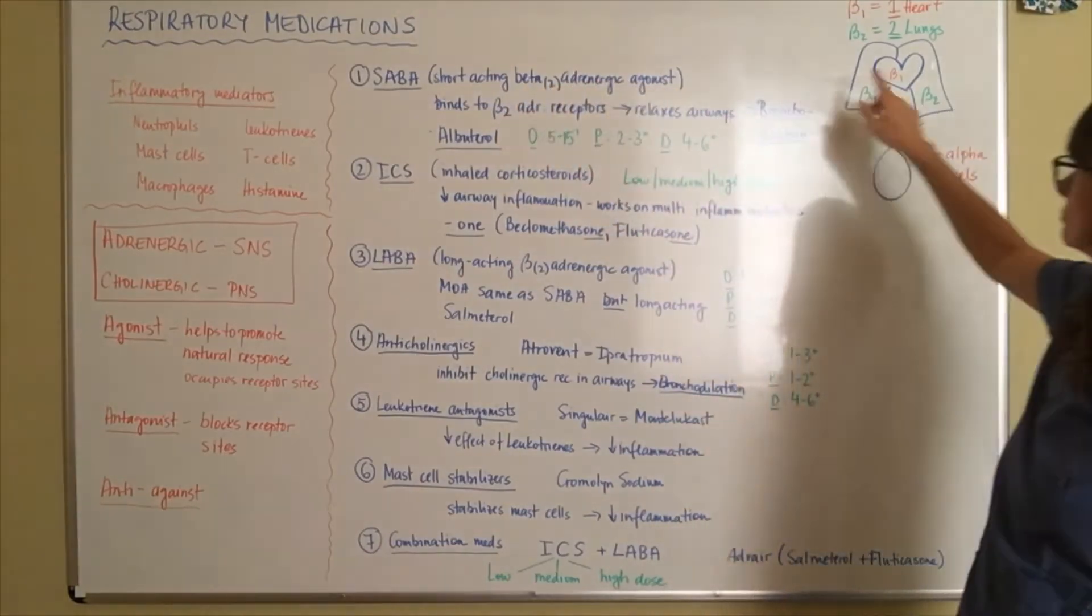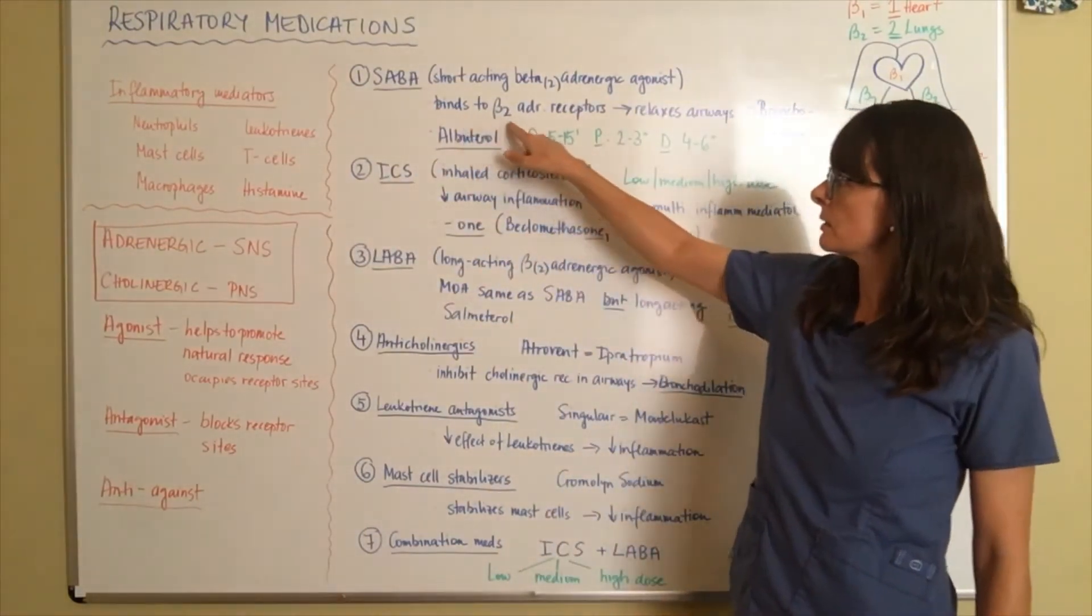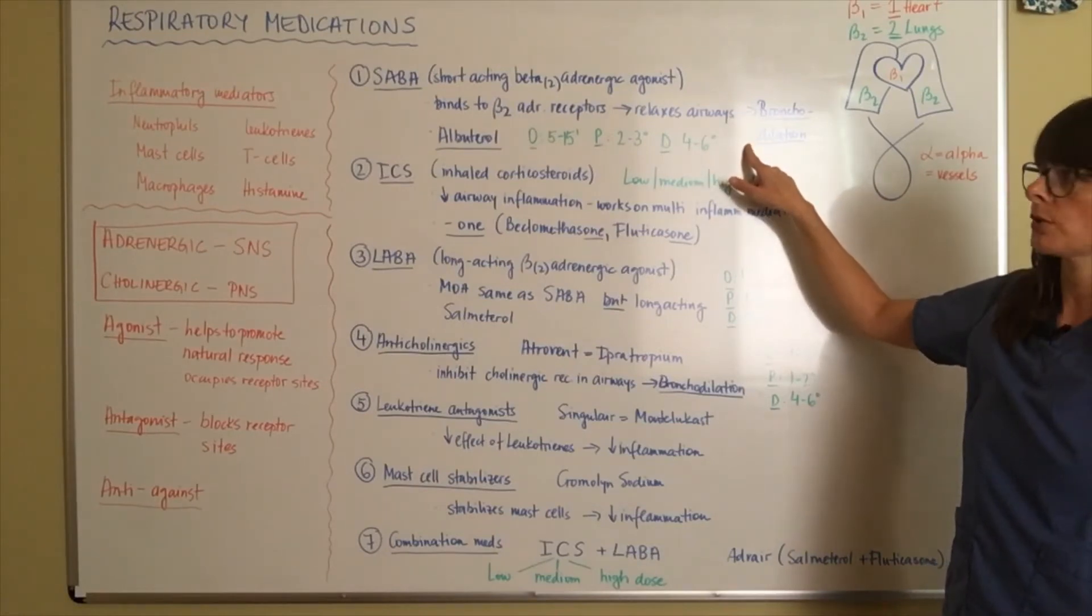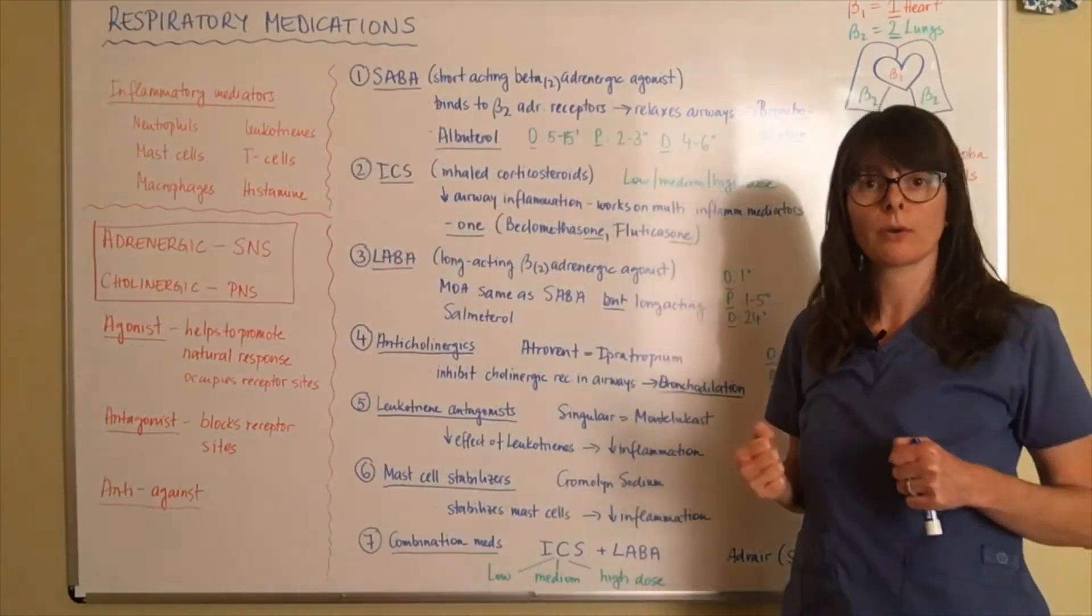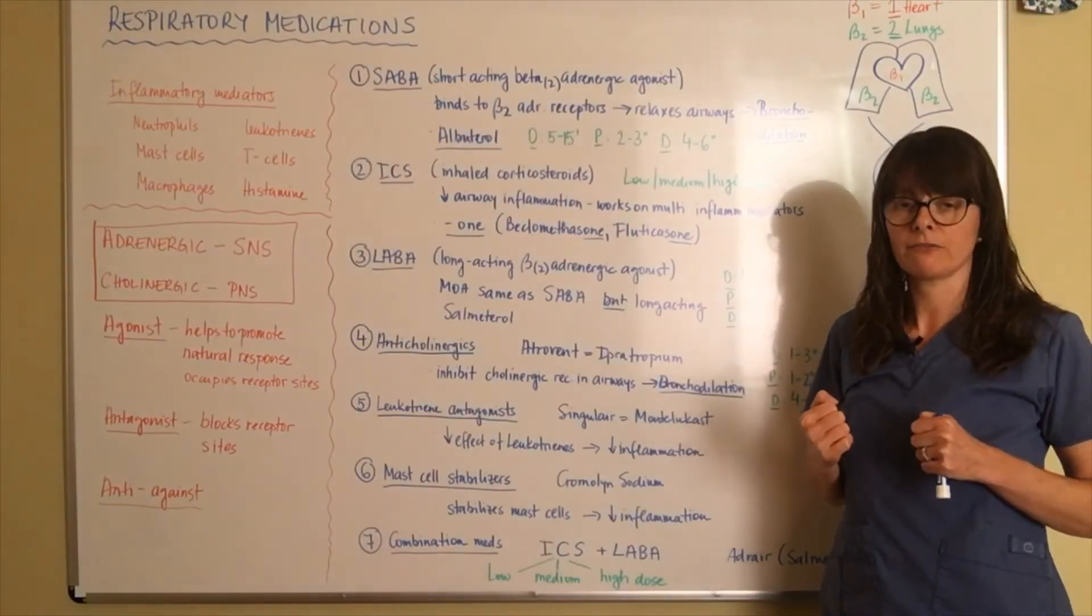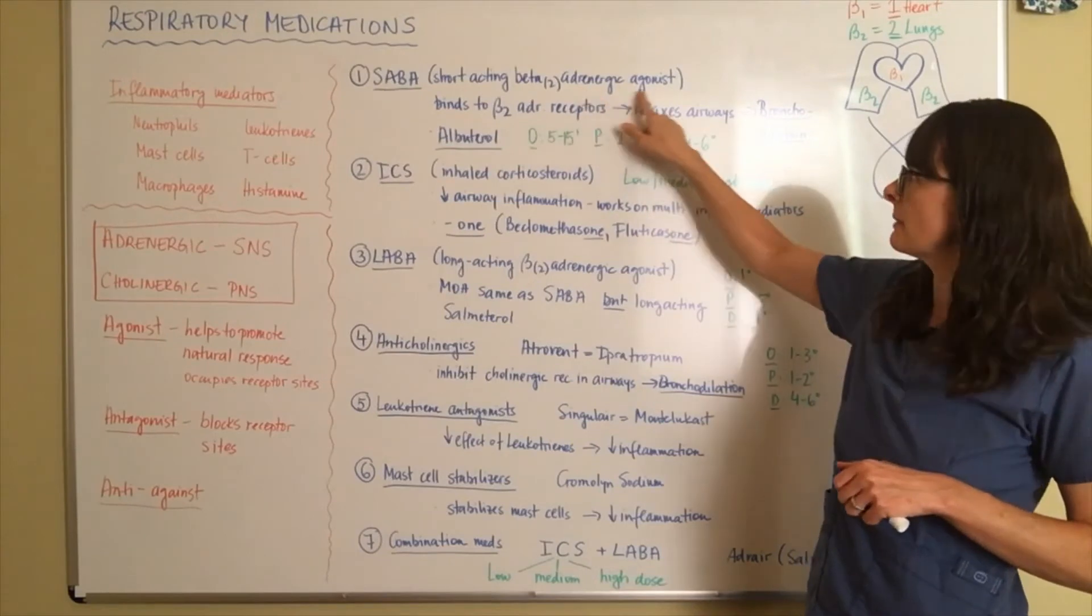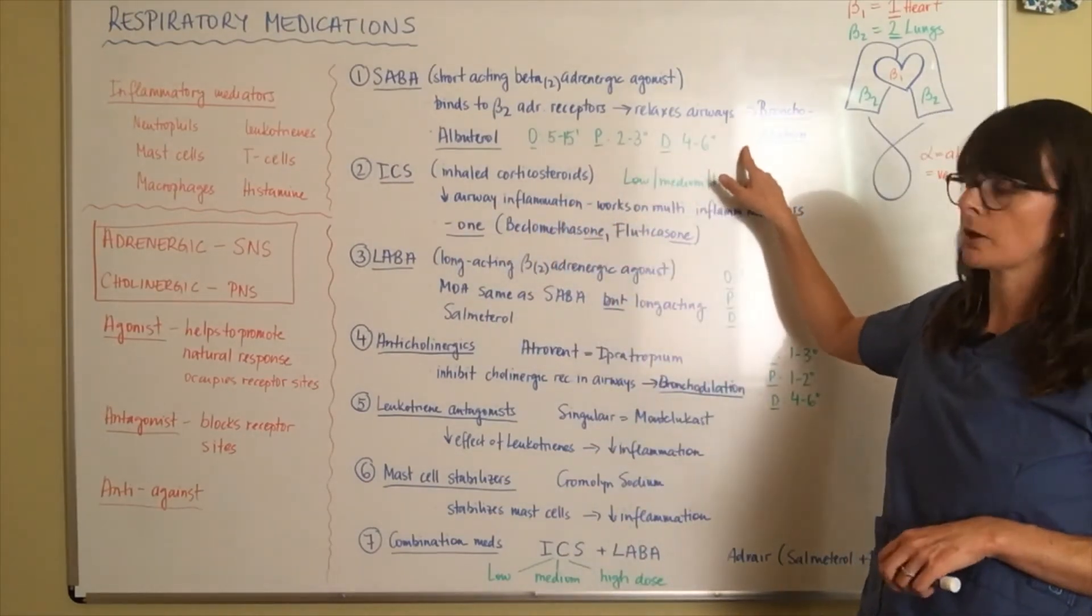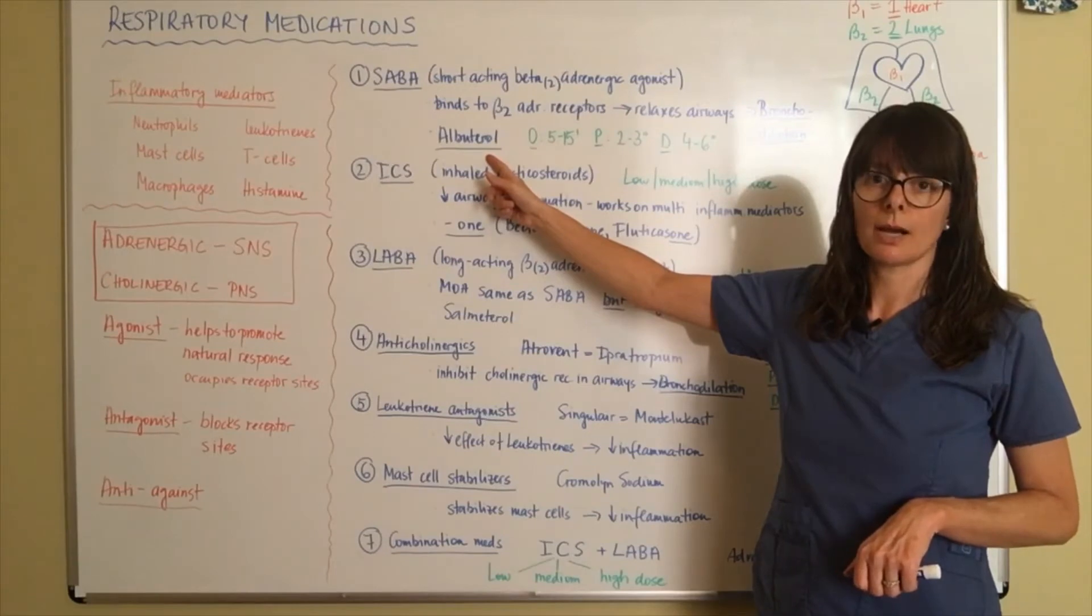So very short acting. So beta-2 lungs, adrenergic sympathetic nervous system. So basically this binds to the beta-2 adrenergic receptors. Therefore it relaxes the airway smooth muscle and causes bronchodilation, right? When we have a sympathetic nervous system response, when we need to get ready to fight or flight, when we need to get ready to run away, we need to be able to dilate our bronchioles by allowing more oxygen exchange because our muscles will need that oxygen for the flight or fight response.